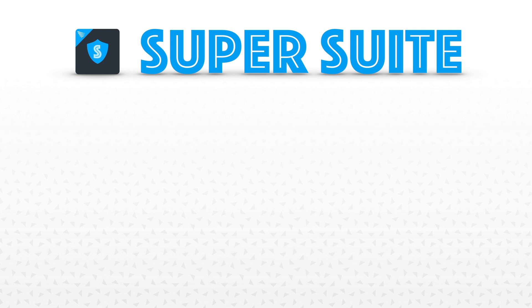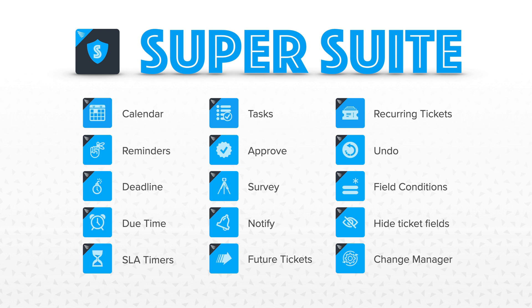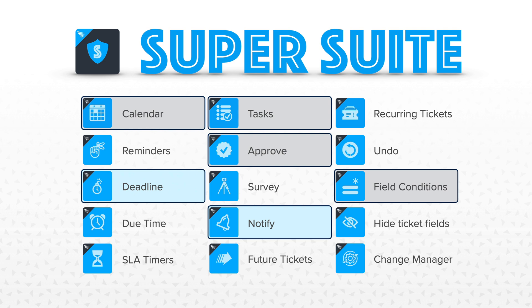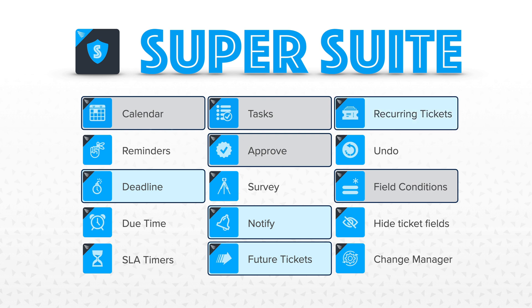These four apps are part of a whole suite we offer at SweetHawk, all built with modularity in mind so you can pick and choose the apps you need. Other apps that could complement a change management flow include the Notify app for pop-up notifications inside Zendesk, the Deadline app for triggering actions at a particular date and time, the Future Tickets app for scheduling follow-up tickets, and the Recurring Tickets app for changes that happen on a repeating basis.